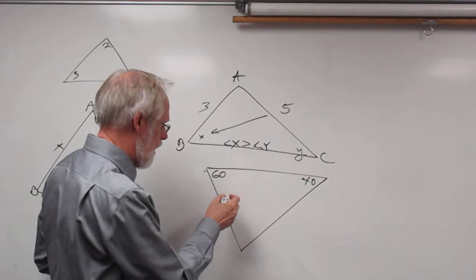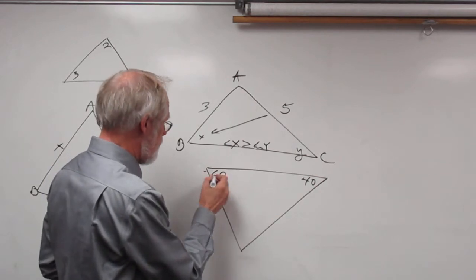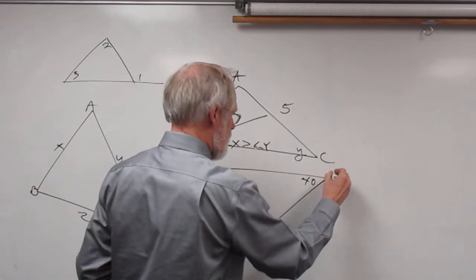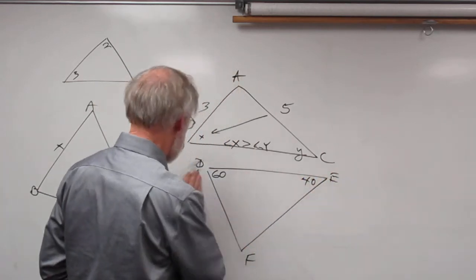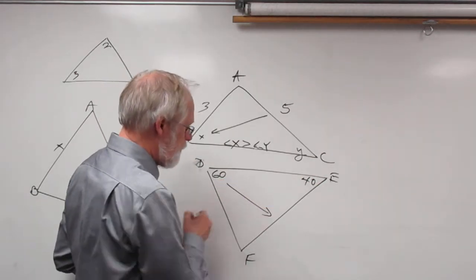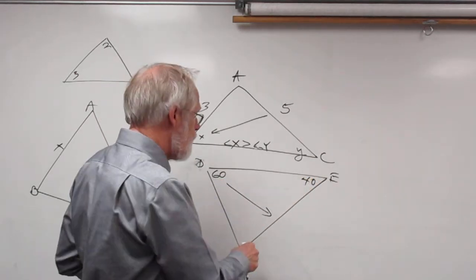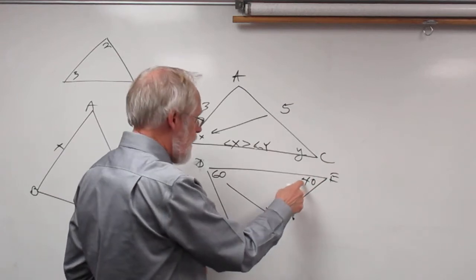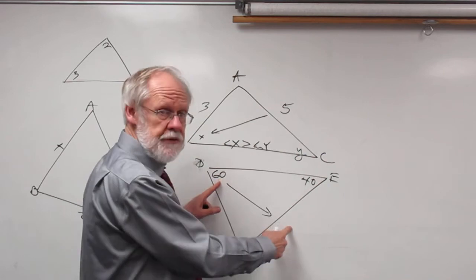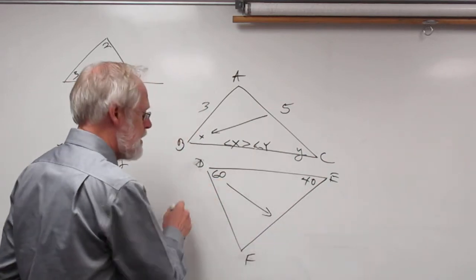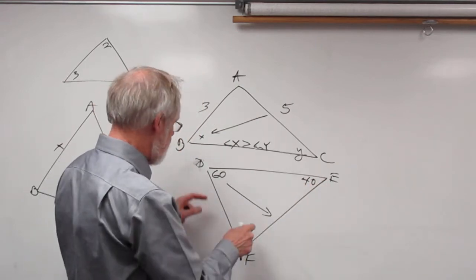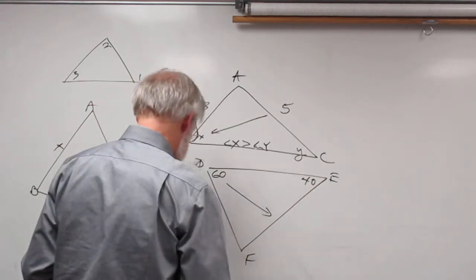This goes in reverse as well. If you have triangle DEF and this angle is 60 degrees, then the side opposite it, EF, is going to be larger than the side opposite the 40 degree angle. Larger angle means larger side opposite it. So angle D is bigger than angle E, therefore EF is bigger than DF.